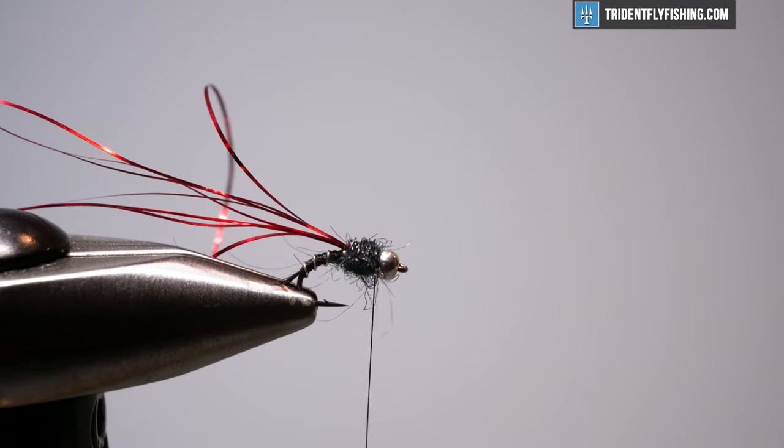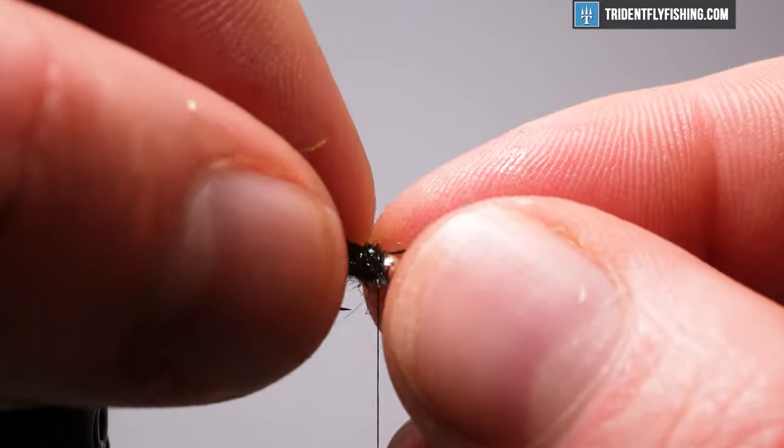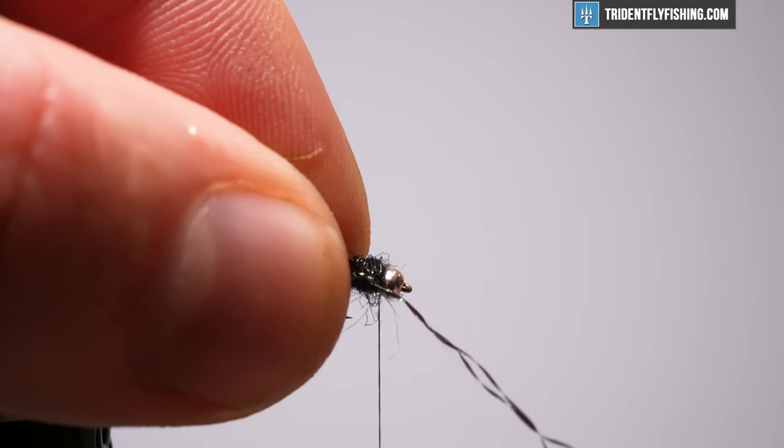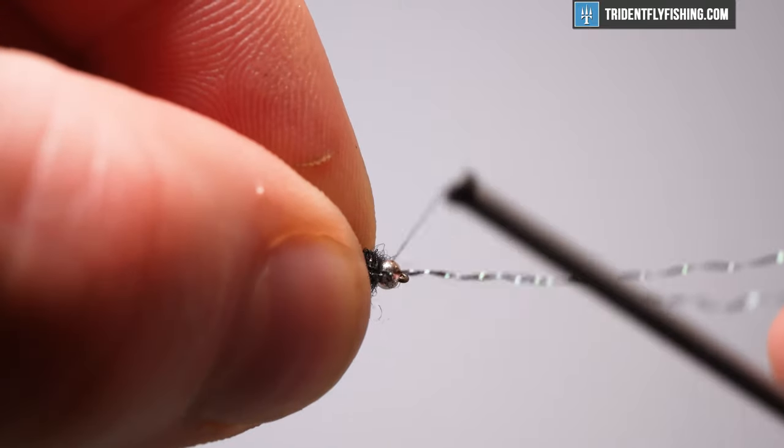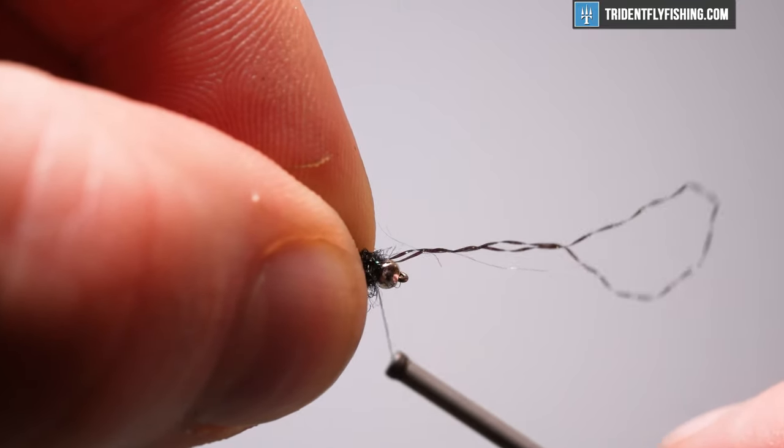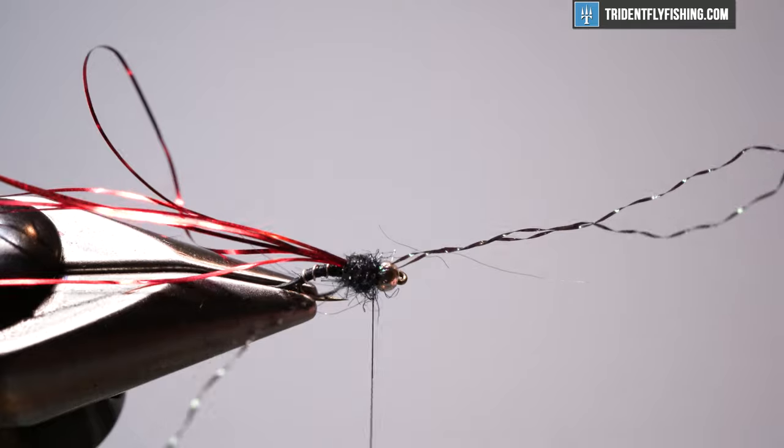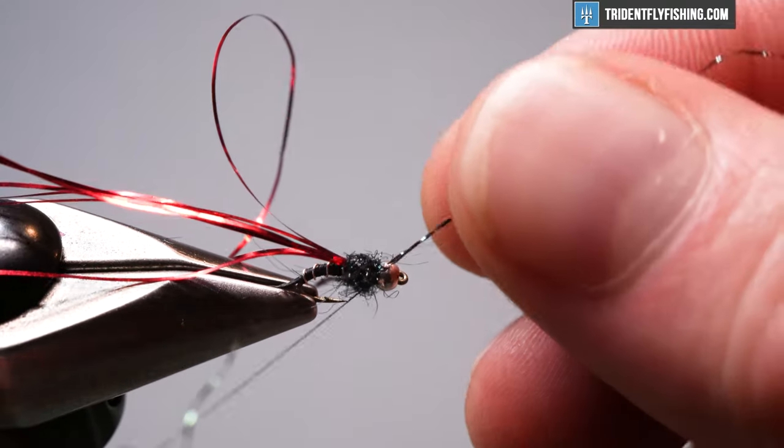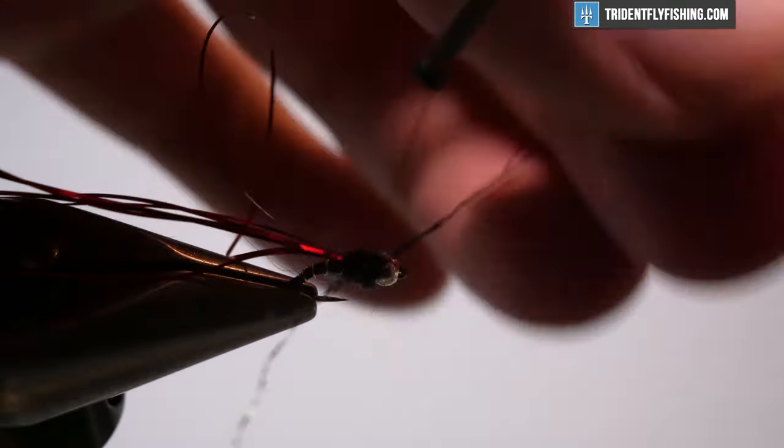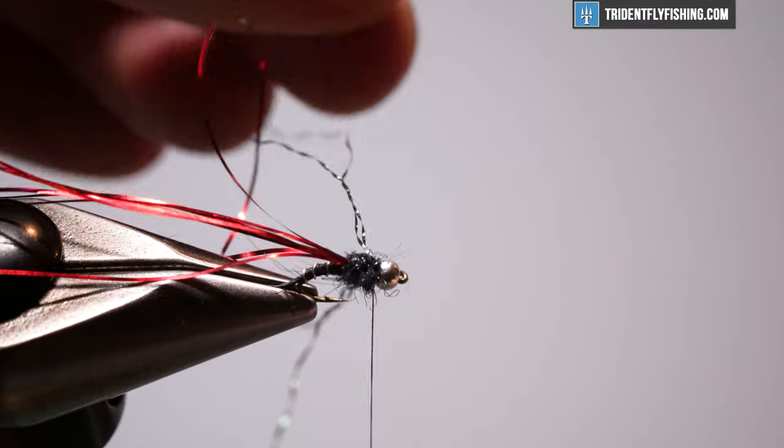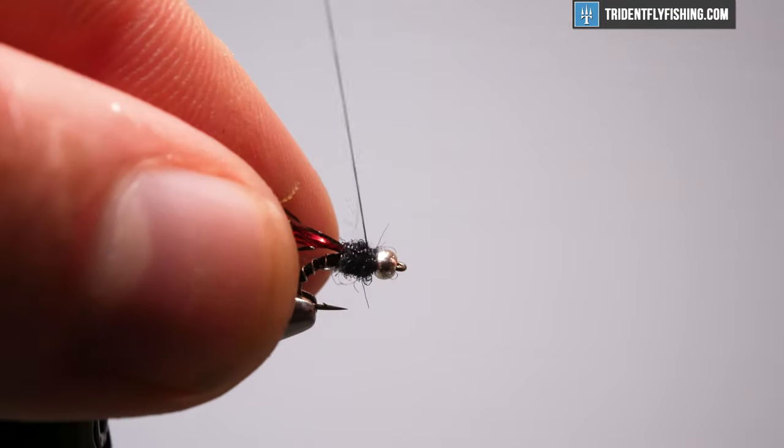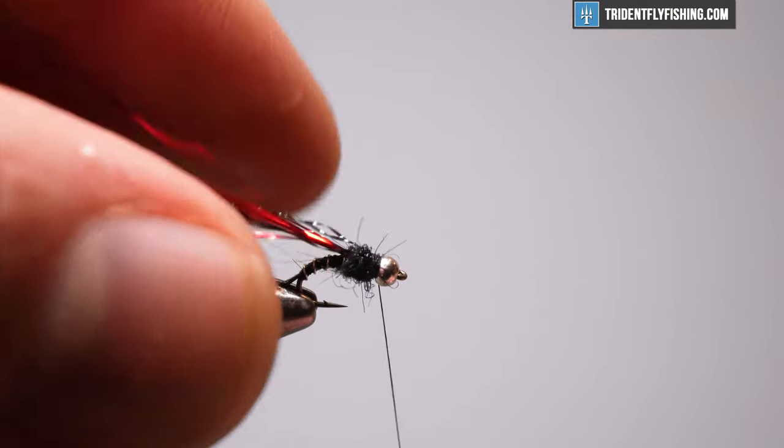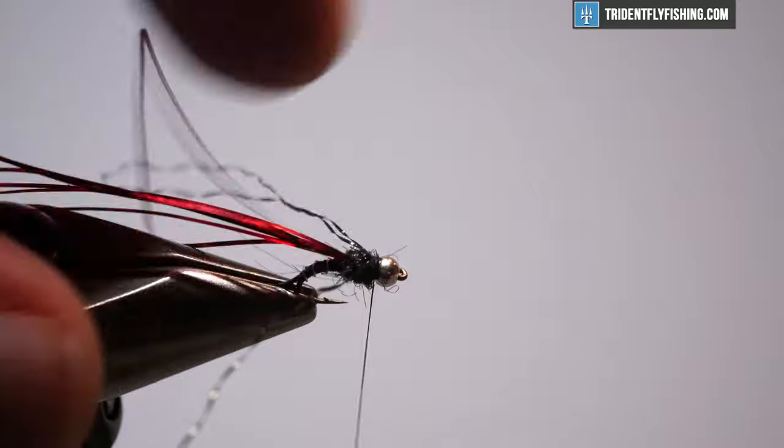So for legs, I have some crystal flash and I have this in black and I have it in the micro size. For this size hook, I like these smaller legs. You'd probably get away with standard black crystal flash, but this is what I like. So throw a wrap on there and then we're going to come around and throw a cross wrap. Just kick those back. And then we'll come back again. See if we can get them facing back. And they are. So we're going to leave that there.